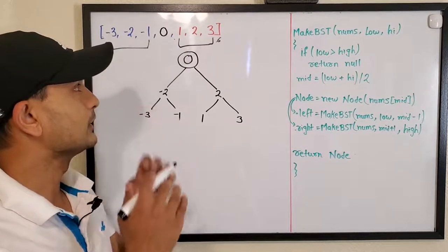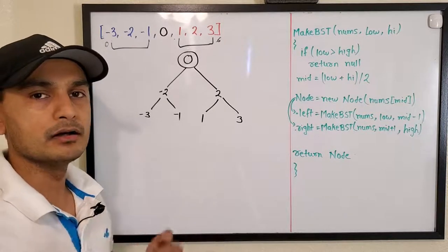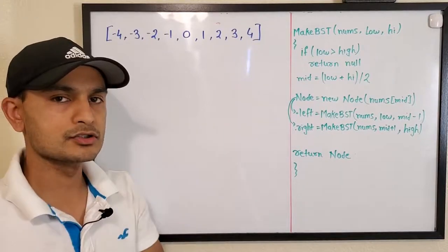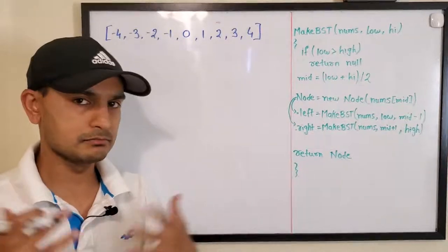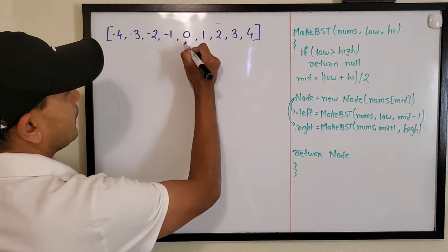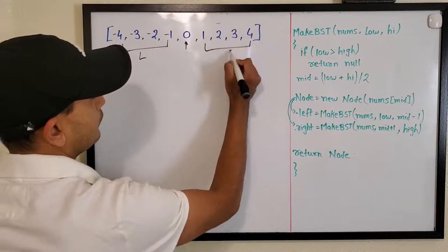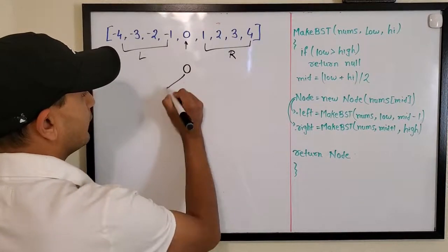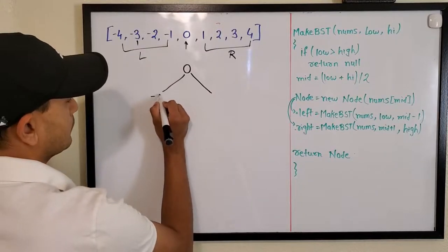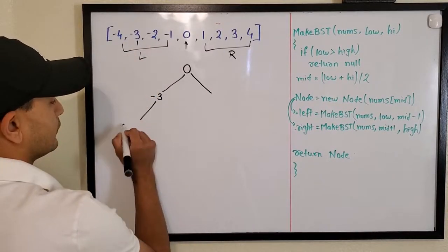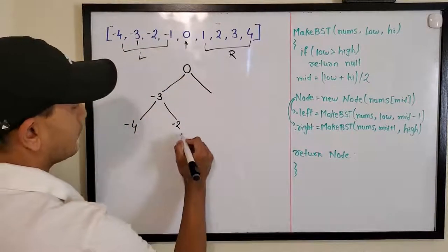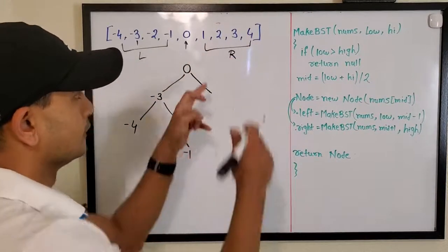Let's take a slightly bigger array — we add minus four and four to the previous array. We pick the middle element, zero, as the root, with left and right subtrees. For the left subtree, minus three becomes the root. With minus four and minus two remaining, minus two is the middle — there's no left, so minus one becomes the right node.